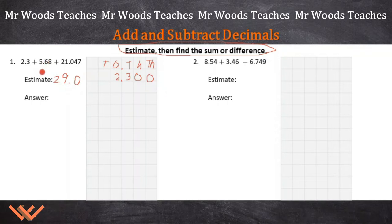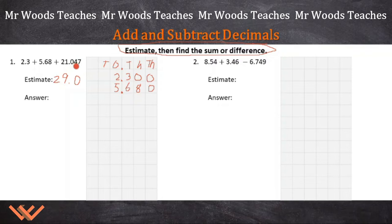5.68 or 5 and 68 hundredths. So 5, decimal point, 6, 8, 0. This makes sure everything is in the right column. So 21 and 47 thousandths — put it here with the decimal point, 0, 4, 7. Draw my line and add it all up. I'm thinking it'll be close to 29. Let's see.